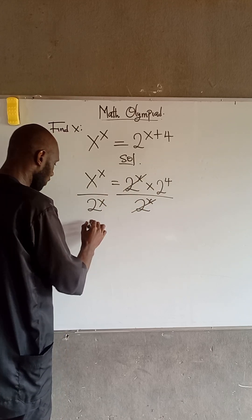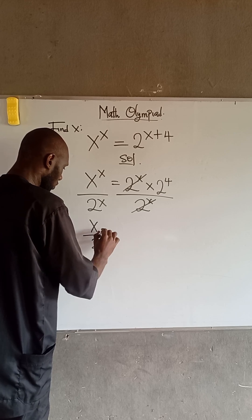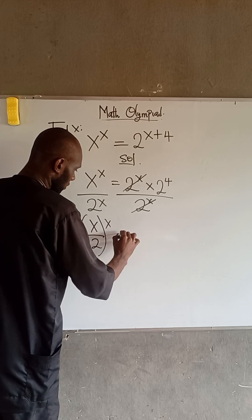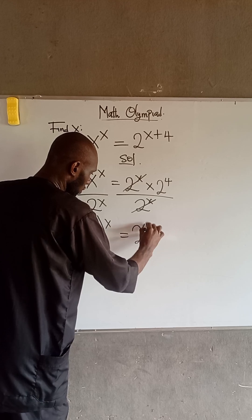So, at this point also, we have that x divided by 2, all raised to the power of x, is equal to 2 to the power of 4.